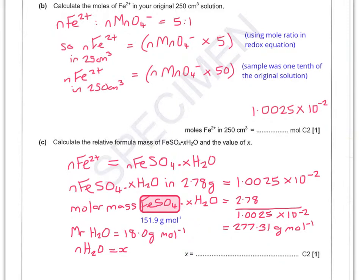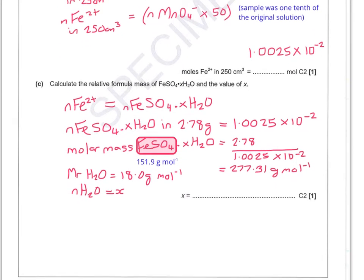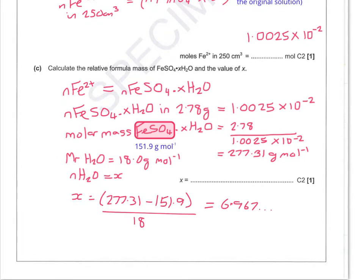So I need to move the page down a bit to make some room at this point. So it says x is 6.967, so you can round that up to 7 H₂Os. So things like slight errors in my titration and things like that would have dropped it down from being 7 exactly.